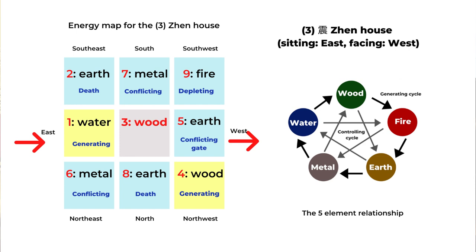For the Zheng house, the number three star goes to the center and other stars follow the flying star theory to different directions. The basic five element theory includes wood, fire, earth, metal, and water. Because the Zheng house has the basic energy of number three, that's a wood element. If an element generates wood, that's a generating cycle. If the element is fire, fire depletes wood, so that's depleting energy. If it's conflicting with wood, that's conflicting energy. The number five star is always a conflicting gate and represents a challenge in this chart.